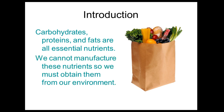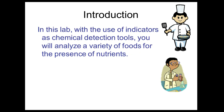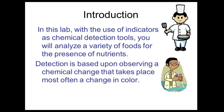Carbohydrates, proteins, and fats are all essential nutrients. We cannot manufacture these nutrients, so we must obtain them from our environment. We can manufacture proteins in our bodies, but we do need to obtain some of the essential amino acids from our diet. In this lab, with the use of indicators as chemical detection tools, you will analyze a variety of foods for the presence of nutrients. Detection is based upon observing a chemical change, most often a change in color.